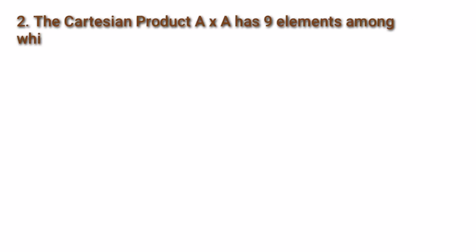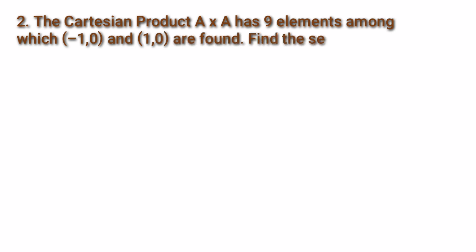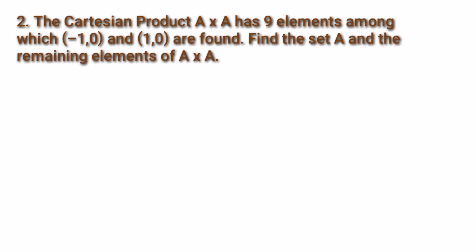Second sum: the Cartesian product A × A has 9 elements, among which (-1, 0) and (1, 0) are found. Find the set A and the remaining elements of A × A. Since A × A has 9 elements, and 3 × 3 = 9, A will have 3 elements.